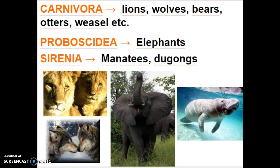Class Carnivora are our carnivore animals — lions, wolves, bears, otters, and weasels. Class Proboscidae: proboscis in Latin means nose, so this is a good way to describe the elephants, since they have a rather long nose. This would include both Asian and Indian elephants.